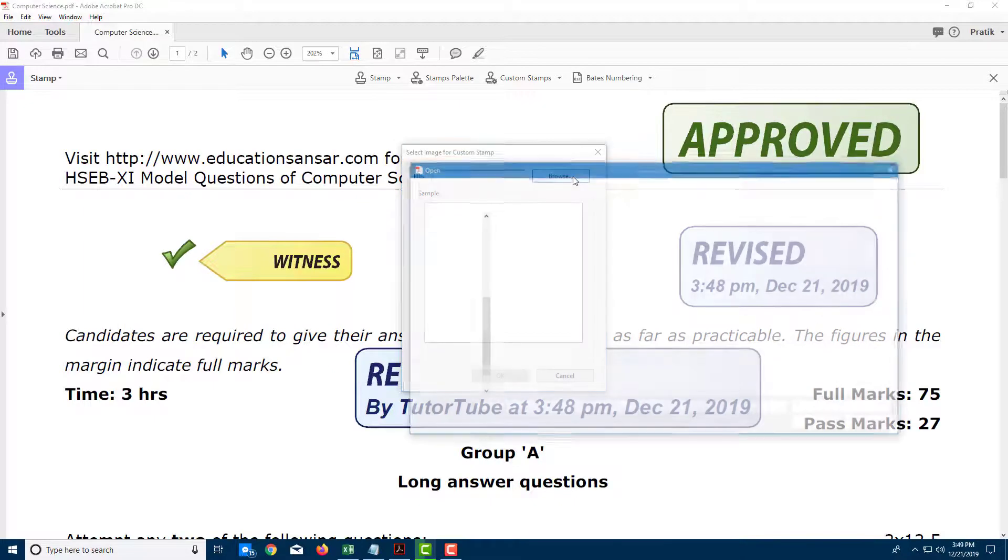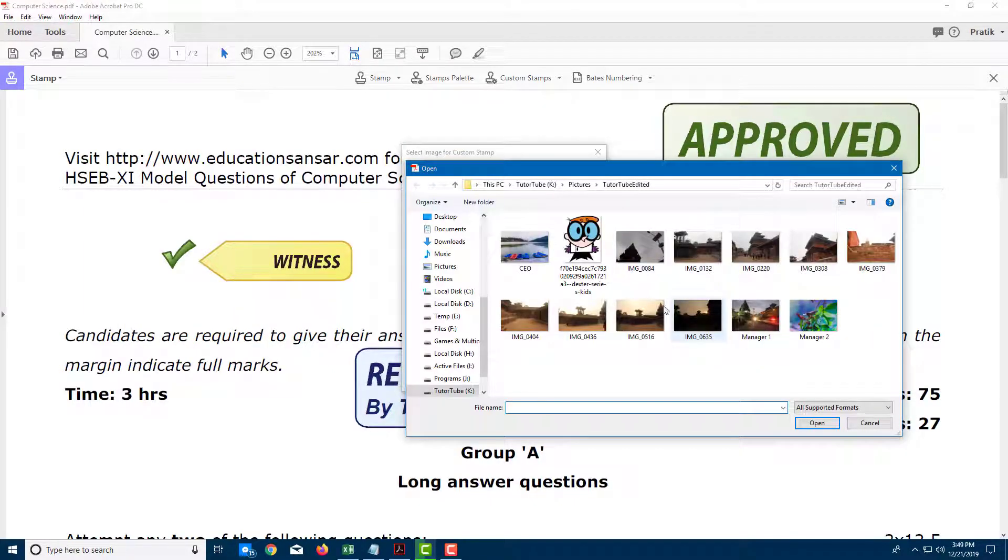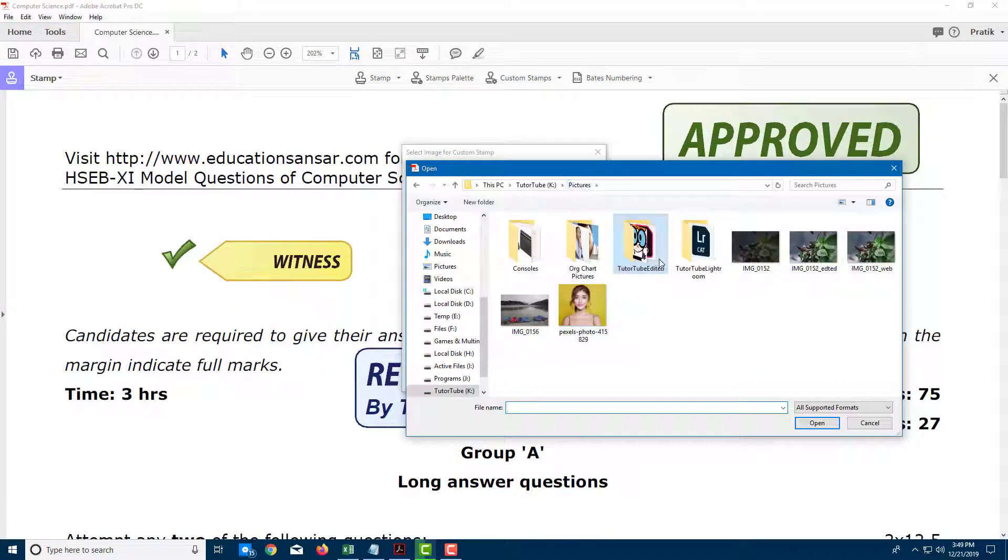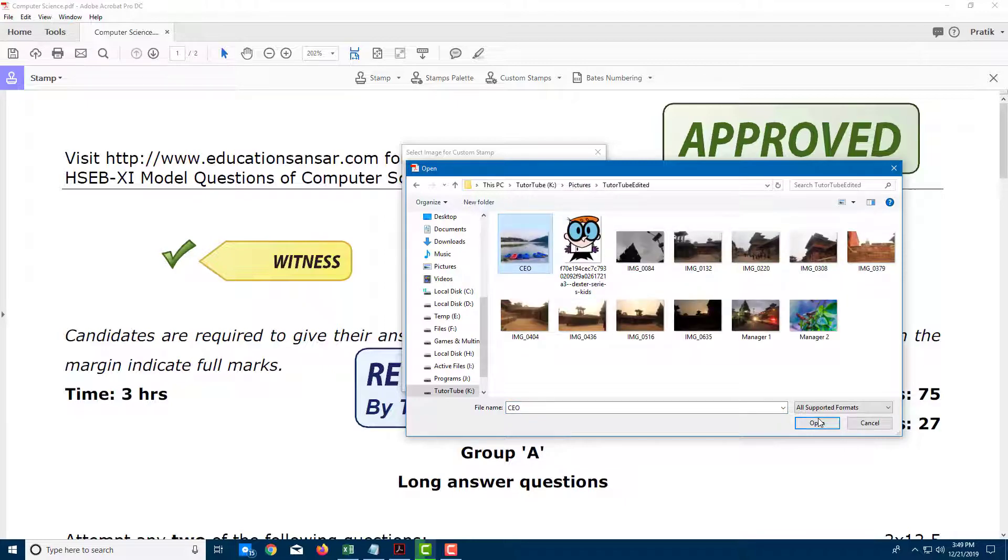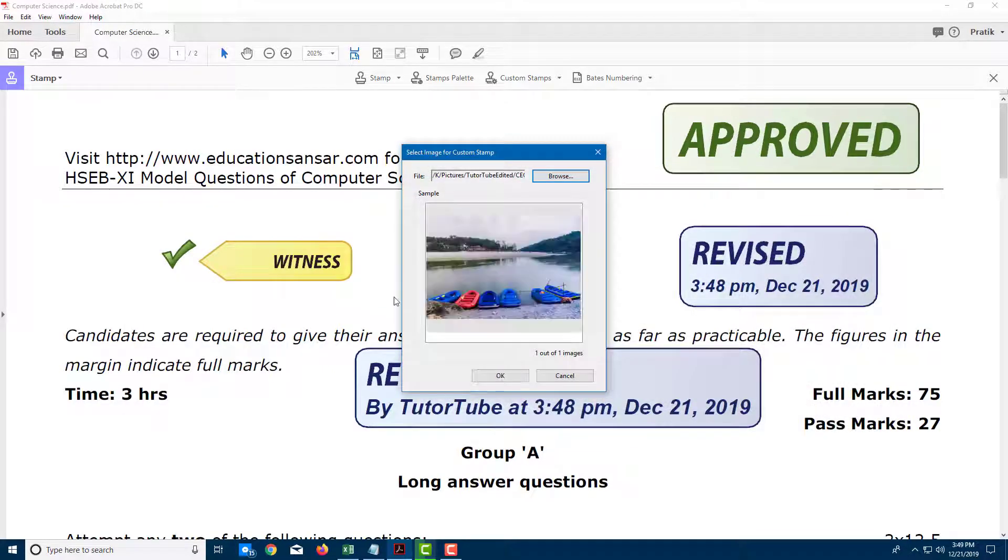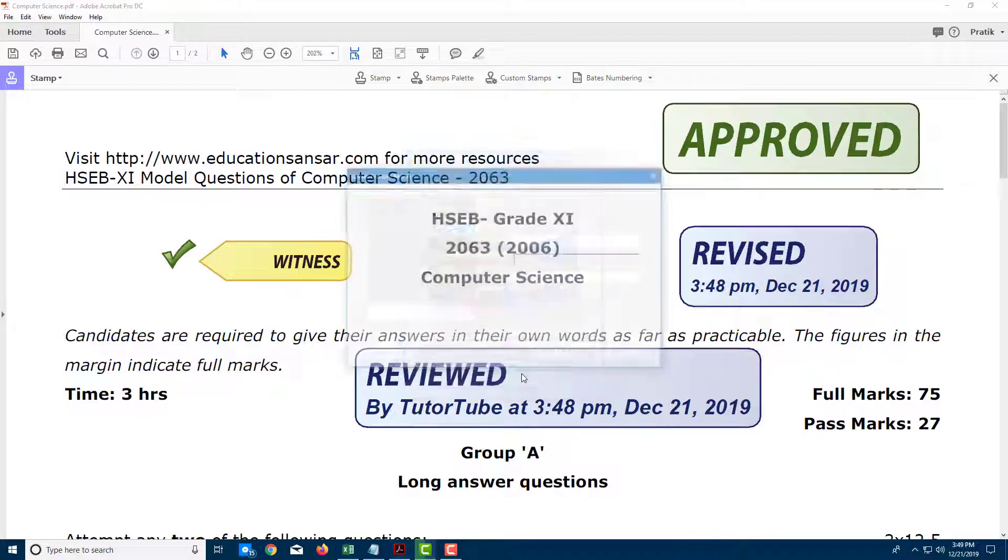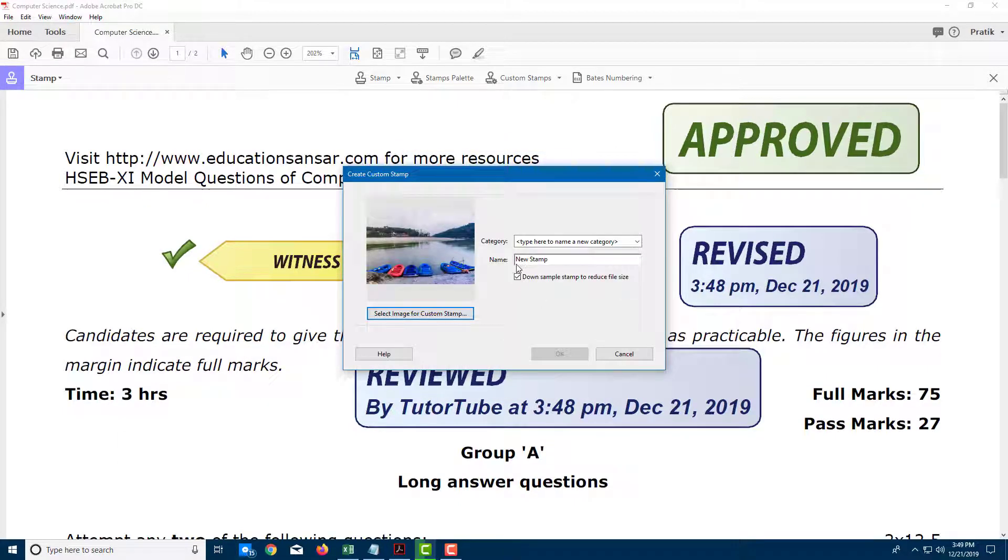You can also import files in JPEG format. Let's say you want to have some pictures like this as a stamp. You can just select this, press Open, and that image is imported and can be used as a stamp.